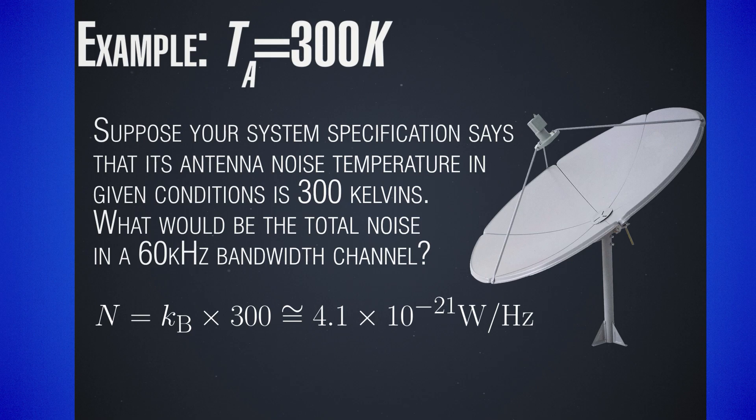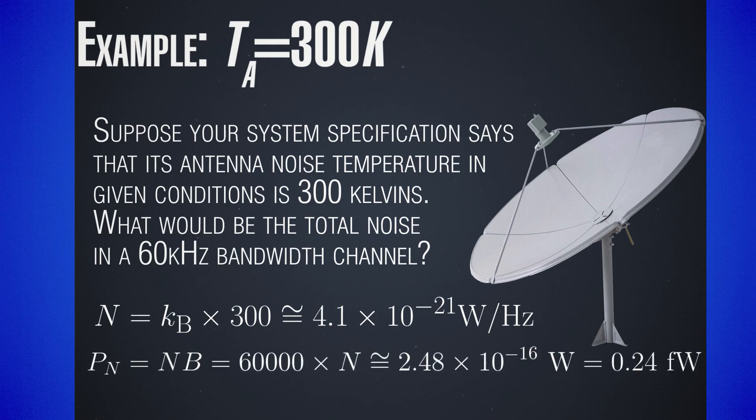Now if we multiply this by our bandwidth, which is 60 kilohertz, we get a total noise of about 0.24 femto watts. Now 1 femto watt is 10 to the power of minus 15 watts, so this is indeed a very small quantity. We do not really know what powers we are dealing with yet, though, so in the next chapter we will see that this is not negligible and in many applications the power of the signal we are considering may be quite comparable to one of the noise.